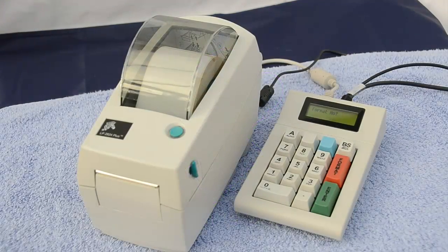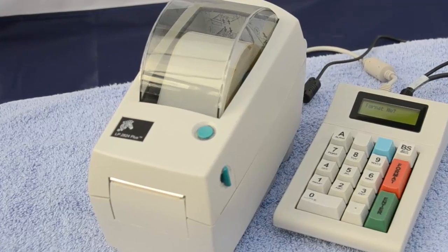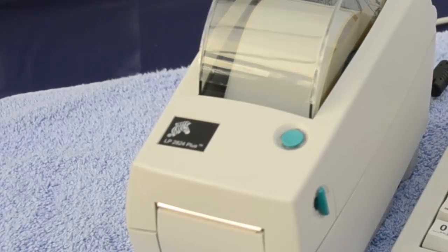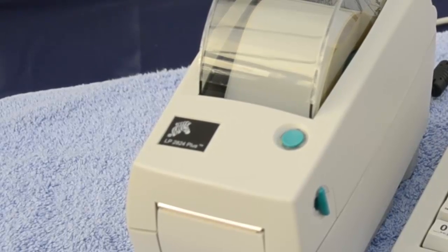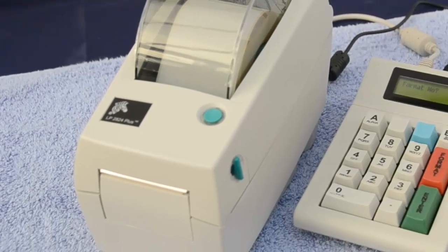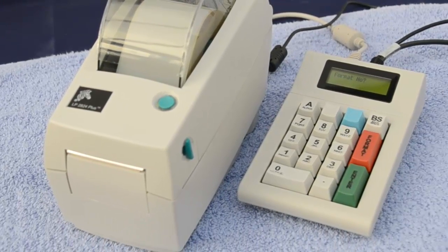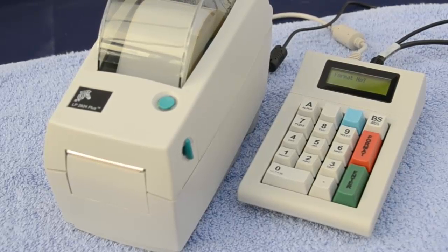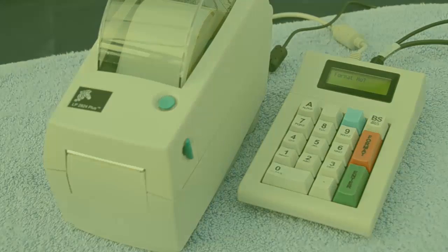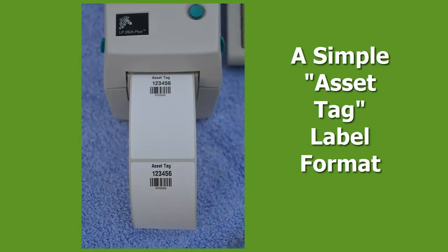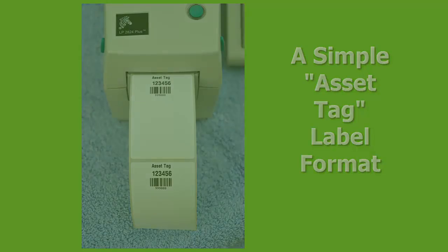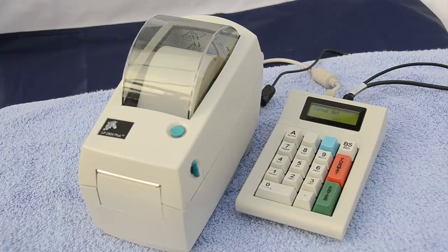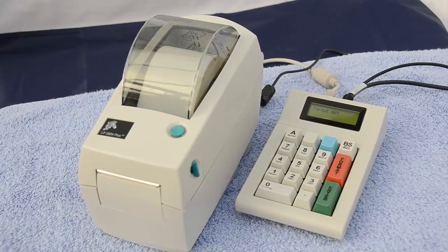The 950 and 950X keypads interact with Zebra ZBI enabled printers such as the GX or the LP desktops seen here or the QL mobile printers by utilizing the printer's ability to run ZBI applications and call up specific or custom label formats residing on the printer. Depending on the printer model used, dozens if not hundreds of label formats can be stored for recall and used through the keypad.